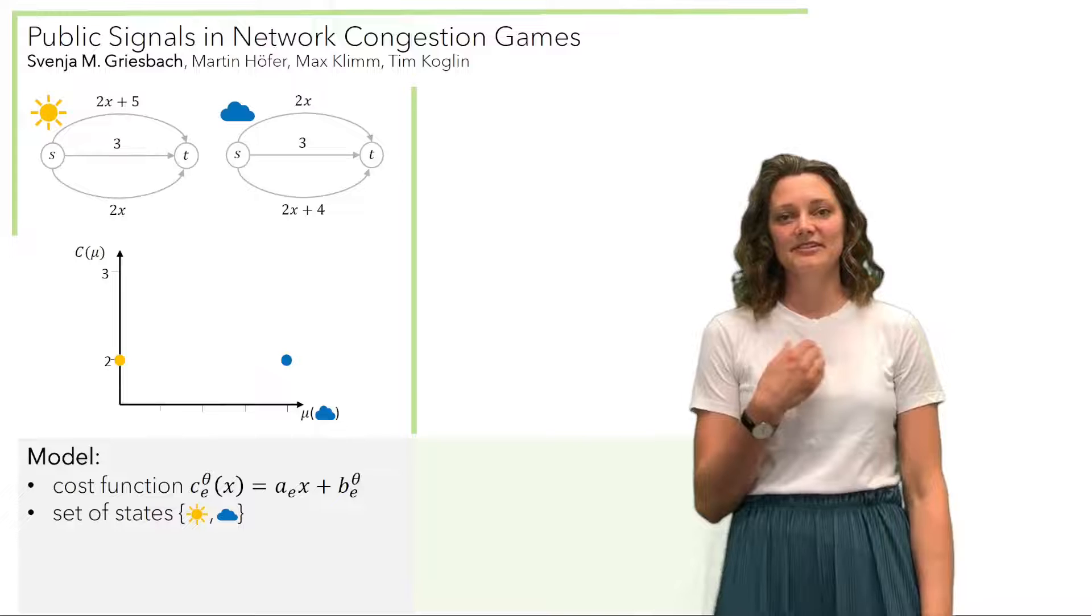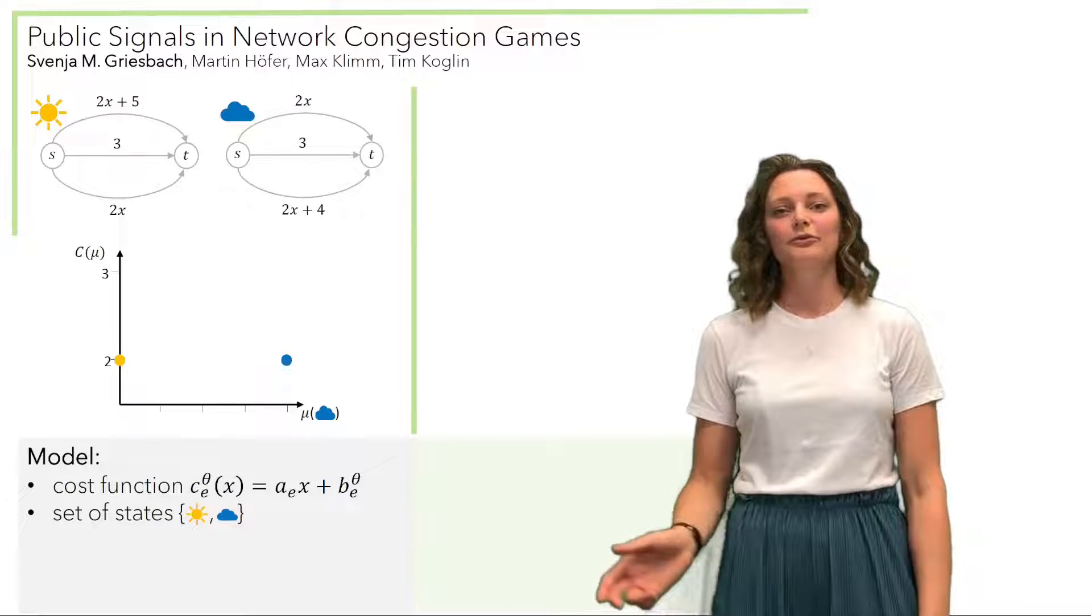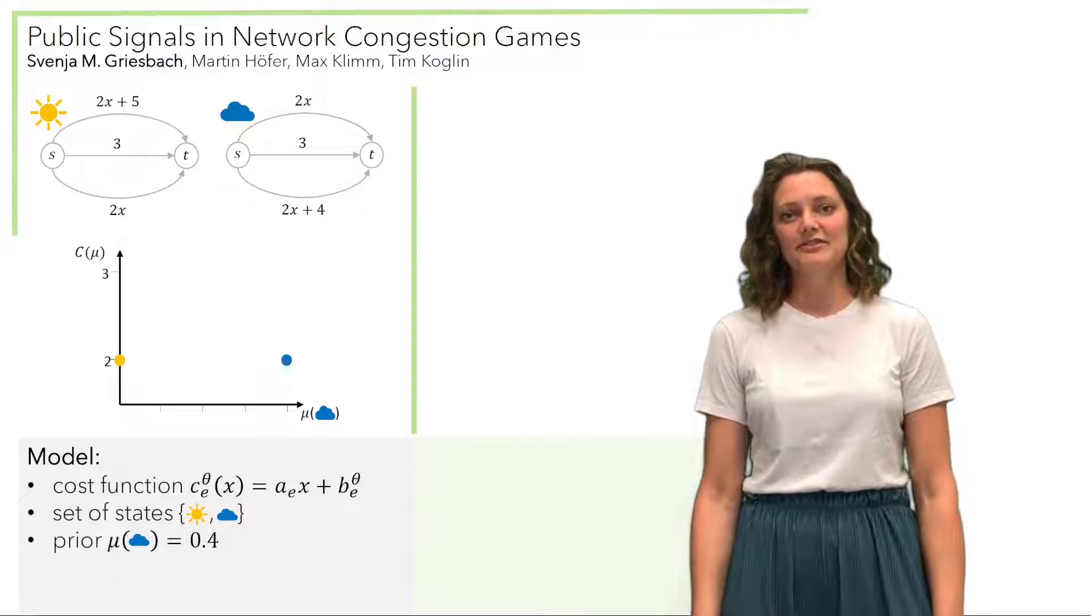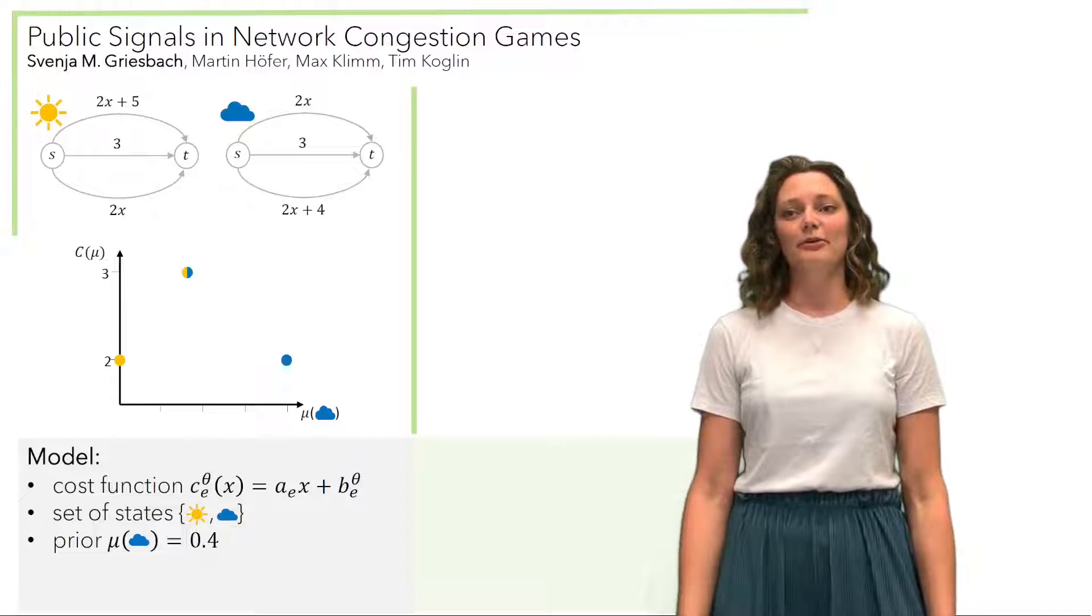But we, as a participant of the road network, we don't really know in which scenario we are. We are only given a prior which tells us that it's raining with a probability of 0.4, resulting in a cost of 3.